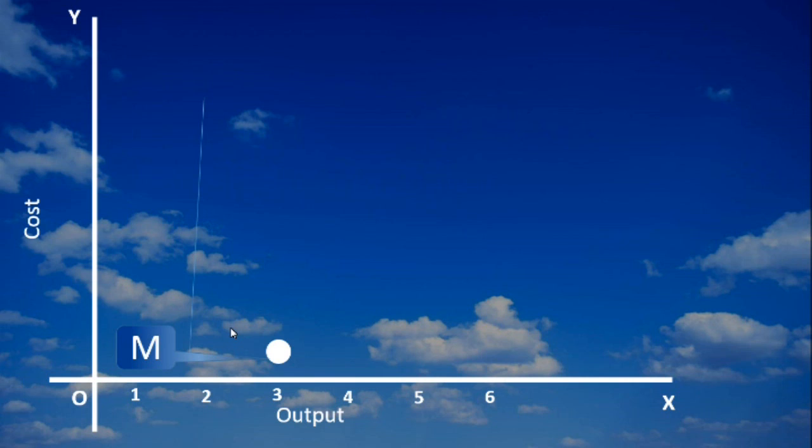And then Average Variable Cost reaches the minimum at four units of output. Average Total Cost reaches the minimum at five units of output. Its total value is higher than that of average variable cost. Fix it as point T.